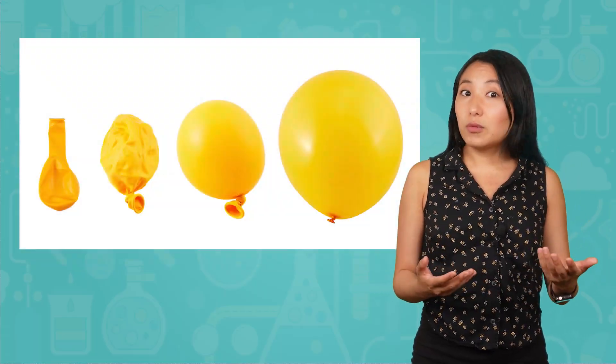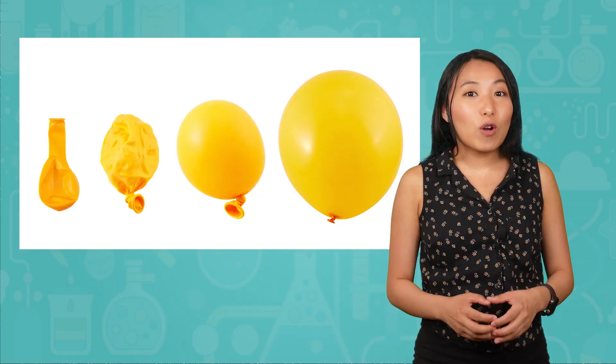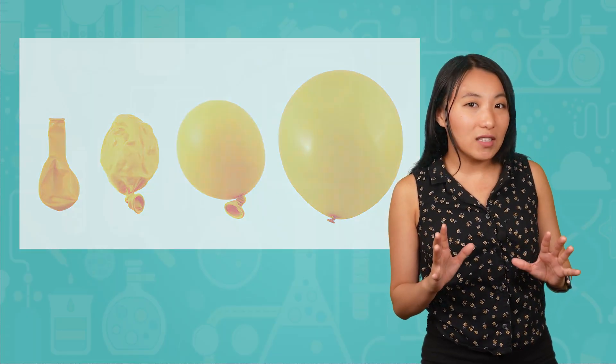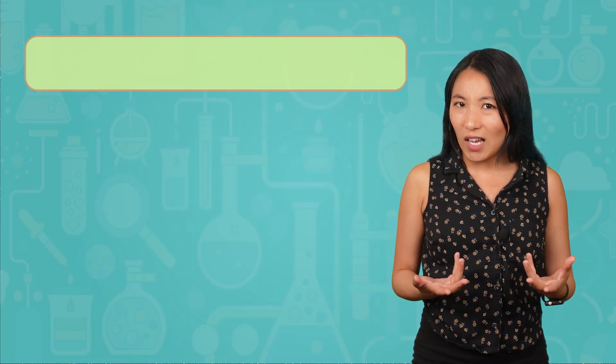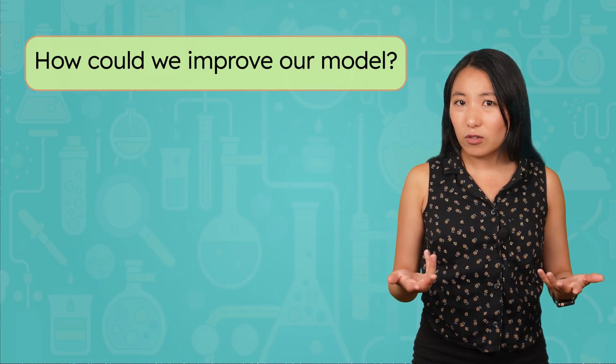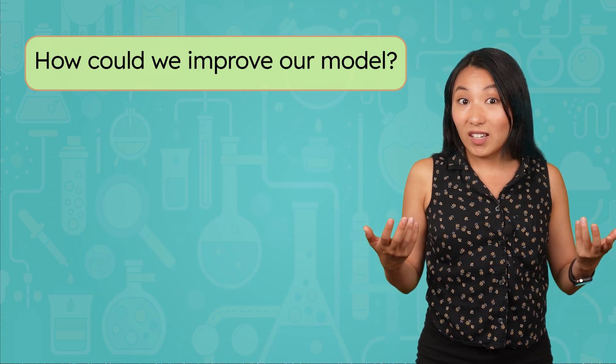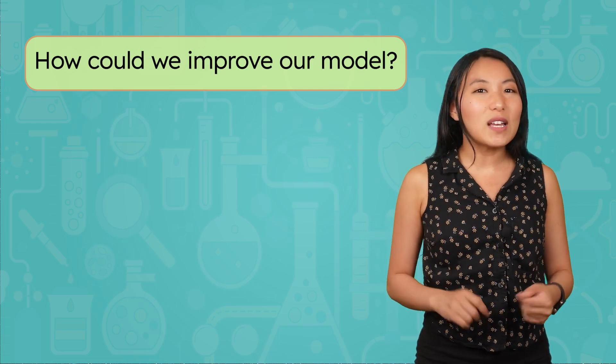Our model is useful, but it's not perfect. And this is a common occurrence with models. Often when building and using a model, we are trying to represent something complex, like the whole universe, with something much simpler, like balloons. Every detail from the real universe won't show up in our model exactly right. But we can sometimes make modifications to our model to more closely represent our subject. Any ideas how we could improve this model to prevent our galaxies from growing? Let's grab a new balloon and see what we can do.